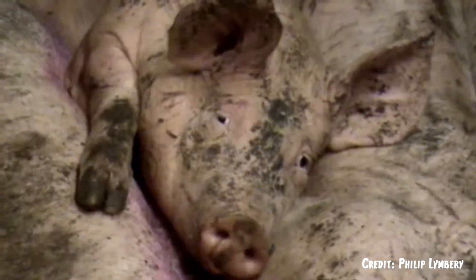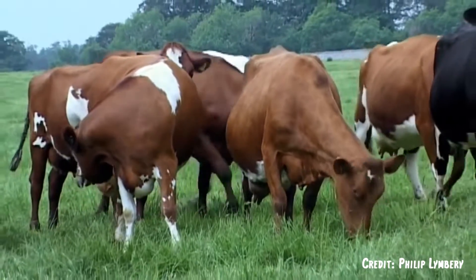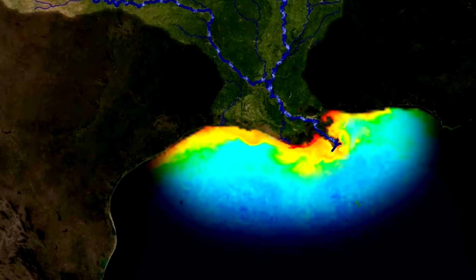Animal agriculture is actually one of the leading causes of deforestation, and the animals that are raised for food actually excrete 130 times the amount of waste as the entire human population. All of that waste is flowing out into oceans, into waterways, contaminating, polluting, and destroying life all over the planet.